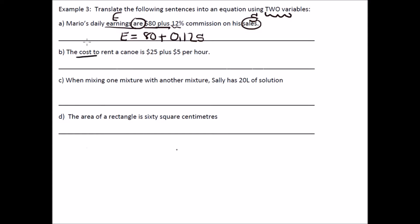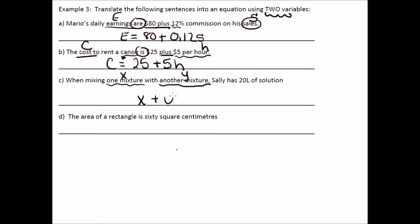The cost — capital C — to rent a canoe equals $25 plus $5 per hour, so 5H, where H is hours. When mixing one mixture with another, let's call them X and Y. The amount of X plus the amount of Y equals 20 liters — that's the solution Sally has.